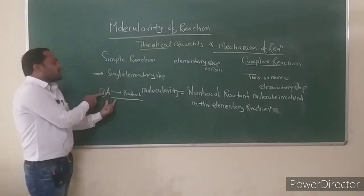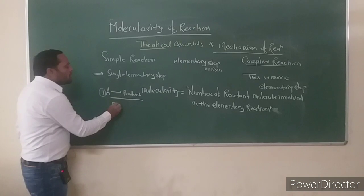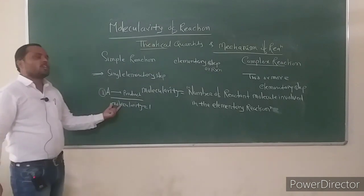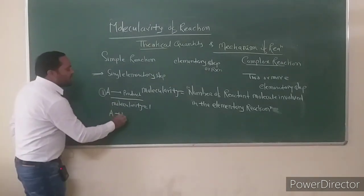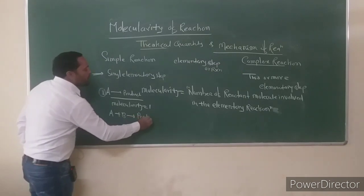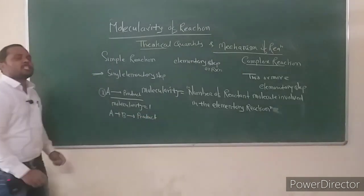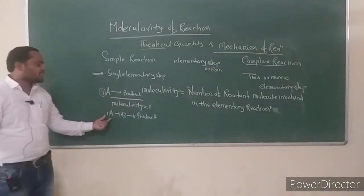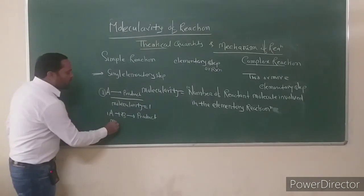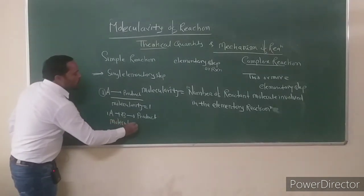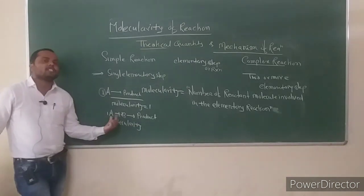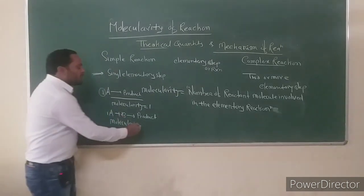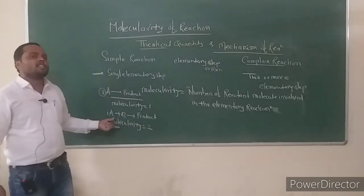If the stoichiometric coefficient of the reactant is 1, the molecularity of this reaction is 1. Now consider another reaction where reactants A and B react to give a product. If this reaction also occurs in one step, the stoichiometric coefficients of A and B are both 1, so the molecularity of the reaction is 2. For simple reactions, molecularity and order of reaction are generally the same.